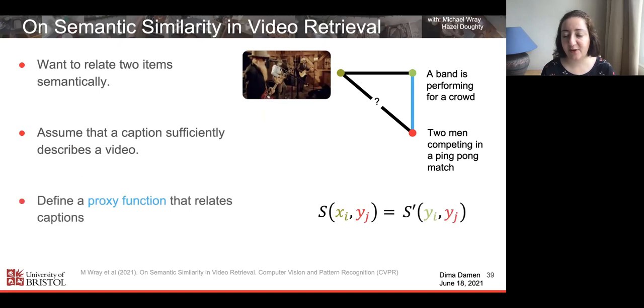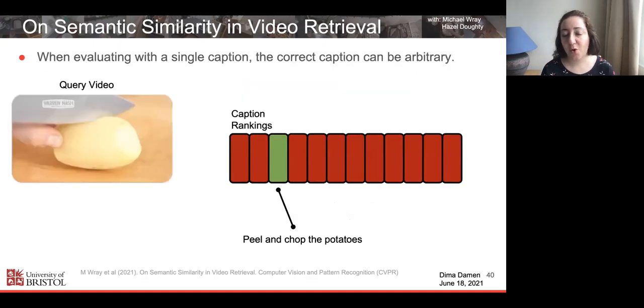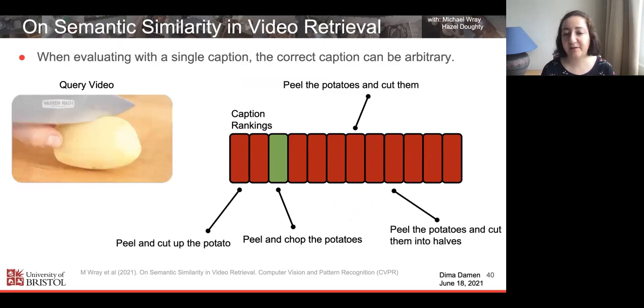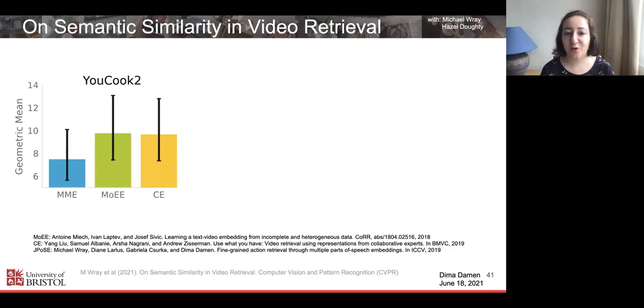In the work, we propose proxies that look at the relevance between the captions, assuming that the caption has sufficient information to describe the video. We propose a number of proxy functions and discuss their pros and cons. With these proxy functions, we can then look at the video, the caption according to the ground truth, the other captions that are also relevant. For each method, we can look at the highest retrieval and the lowest retrieval, because these are all relevant, so we can look at the range of performance of that particular method.